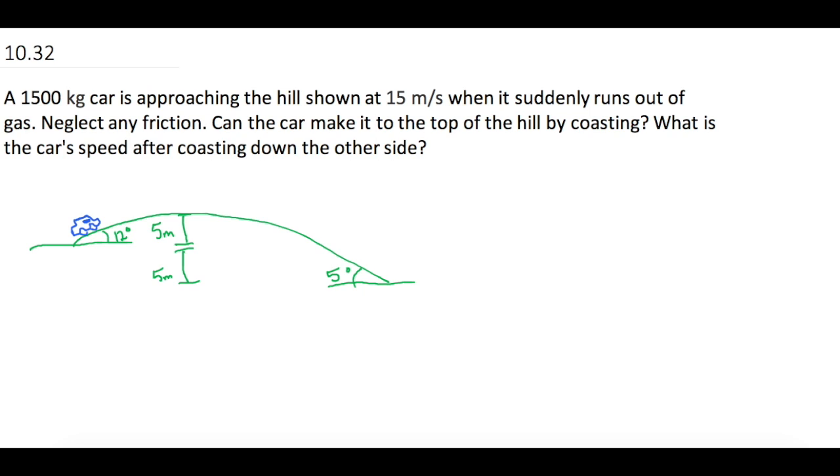A 1500 kilogram car is approaching the hill shown at 15 meters per second when it suddenly runs out of gas. Neglect any friction. Can the car make it to the top of the hill by coasting? And what is the car's speed after coasting down the other side of the hill?